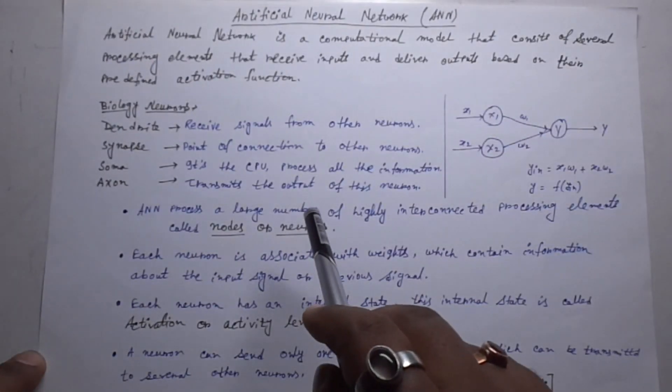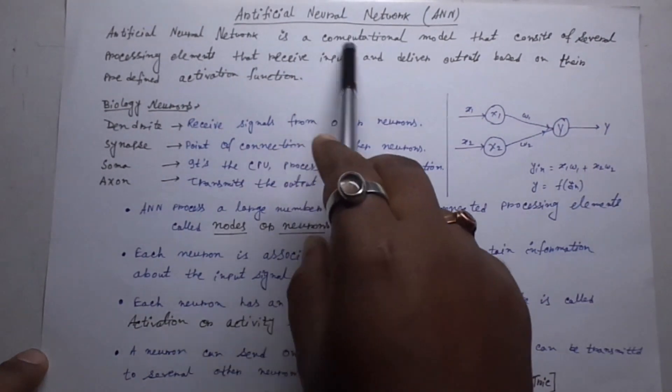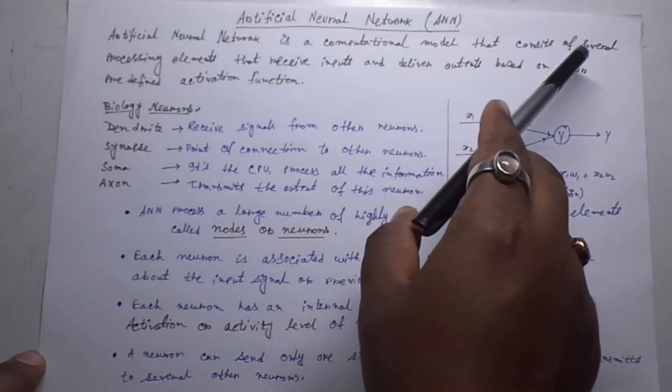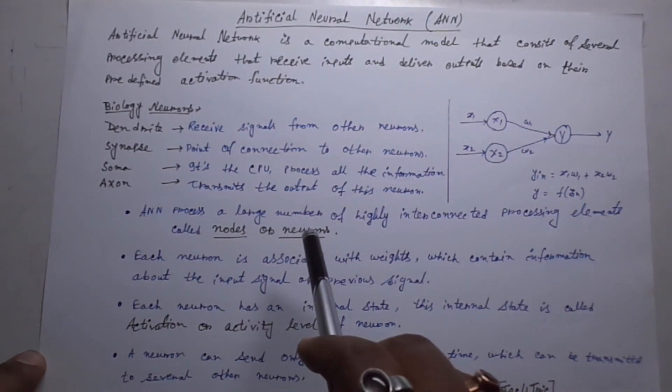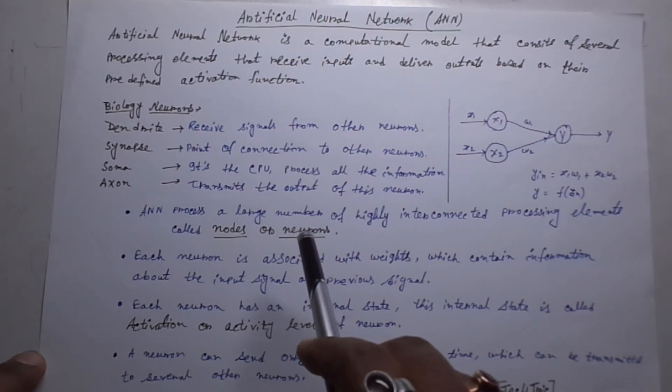So what is Artificial Neural Network? Artificial Neural Network is a computational model that consists of several processing elements that receive inputs and deliver outputs based on their predefined activation function. What is activation function? I will discuss in the next video.